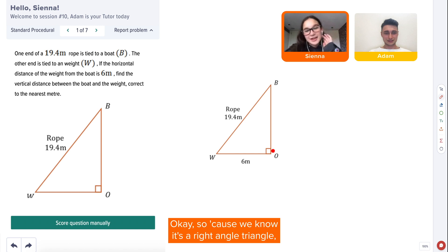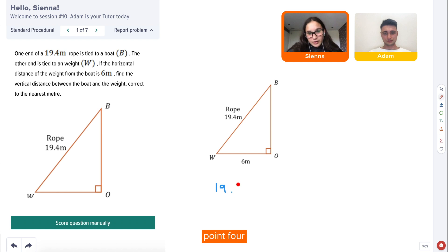Okay, have a crack at it. Okay, so because we know it's a right-angled triangle, we know that 19.4 squared equal to 6 squared plus e o squared.